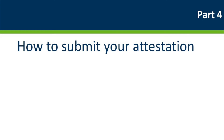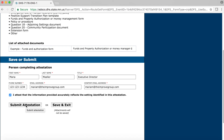We have touched on a few elements of this topic already, but let's focus now on how to submit your attestation. The key thing to keep in mind is that because you are updating your initial attestation, you should only click on the Submit Attestation button. Do not use the Save and Exit button. You will need to add all your attachments to demonstrate that you meet the new requirements. Once you have updated your responses and added your attachments, you are ready to click on the Submit Attestation button at the bottom of the form.